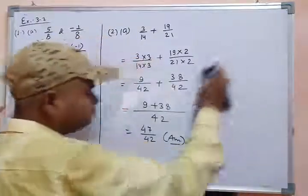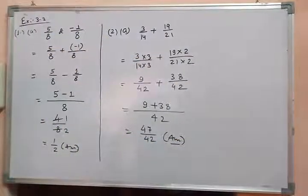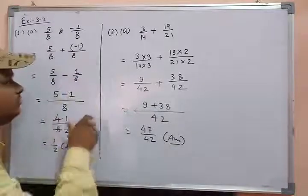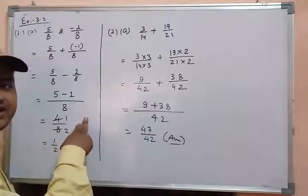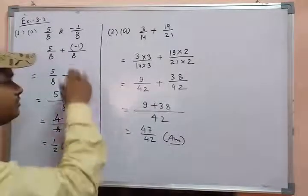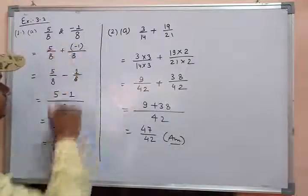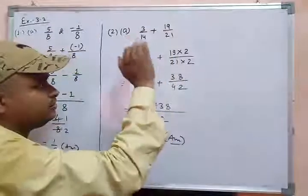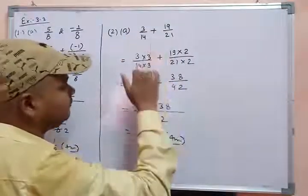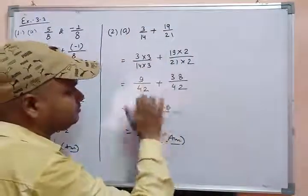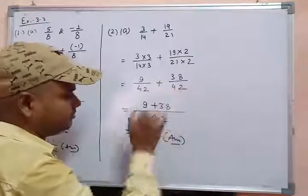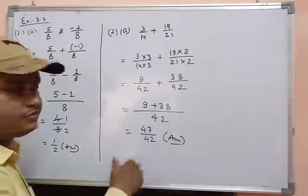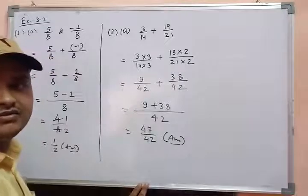So the first question was based on like rational numbers, making it easy to add and subtract. For unlike rational numbers, you first convert them into like rational numbers, then add. Before moving to the next question, pause the video to note it down in your copy.